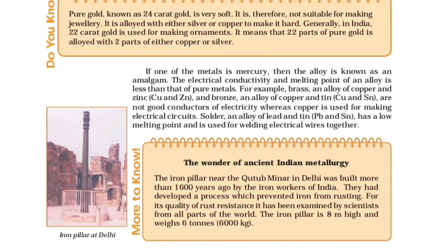Prevention of corrosion: The rusting of iron can be prevented by painting, oiling, greasing, galvanizing, chrome plating, anodizing, or making alloys. Galvanization is a method of protecting steel and iron from rusting by coating them with a thin layer of zinc. The galvanized article is protected against rusting even if the zinc coating is broken.